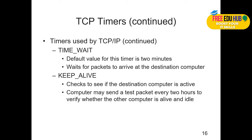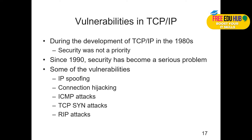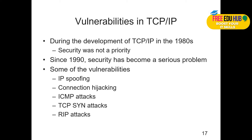Now, vulnerabilities in TCP/IP: during the development of TCP/IP in the 1980s, security was not a priority because there were not many vulnerabilities or attacks taking place. Since 1990, security has become a serious problem. Some of the vulnerabilities are IP spoofing, connection hijacking, ICMP attacks, TCP SYN attacks, and RIP attacks. IP spoofing and connection hijacking are examples of man-in-the-middle attacks. ICMP attacks are ping-based denial of service attacks.